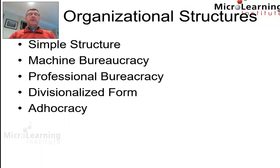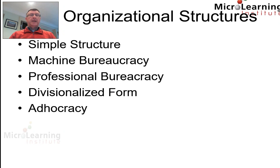Now let's look more closely at the five organizational structures. These are: the simple structure, the machine bureaucracy, the professional bureaucracy, the divisionalized form, and what Mintzberg called an adhocracy.